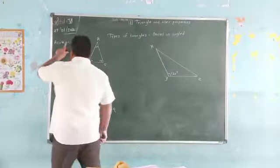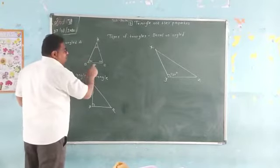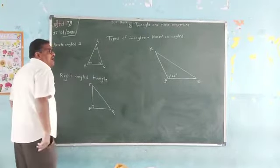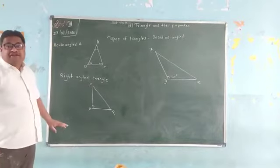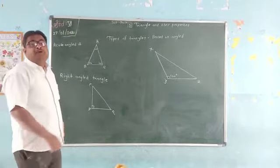Now, see. This is acute angle triangle. In triangle ABC, all angles are less than 90 degrees. That's why they are called acute angle triangles.